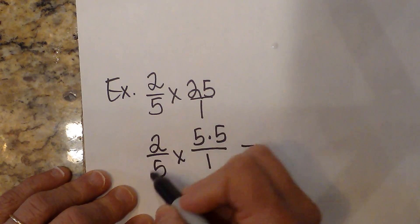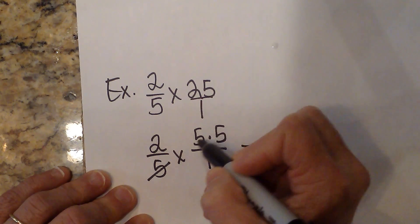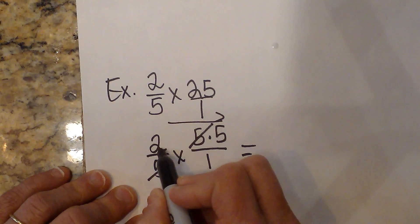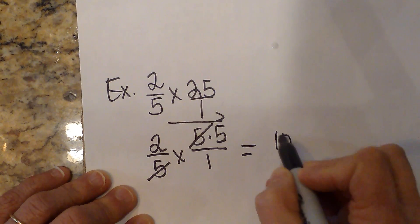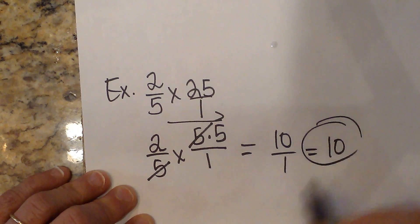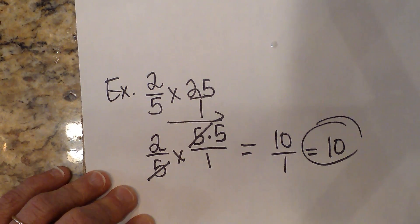Now let's cancel. So I can cancel any term on top with any term on the bottom. Now we multiply across. So 2 times 5 is 10. And then this canceled out, so I just have a 1 on the bottom, which just leaves me with the whole number 10 as the answer.